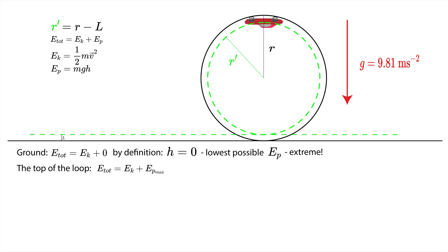Since we know the effective radius of the loop, we also know the maximal effective height, which is h equal to 2r prime. Therefore we also know the maximal potential energy, and it is another extreme.